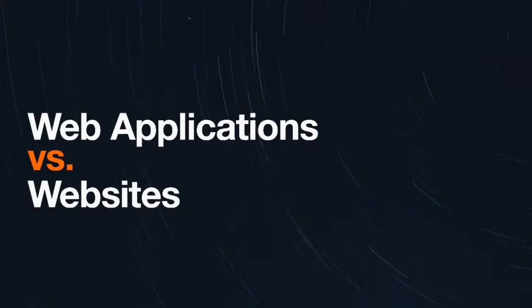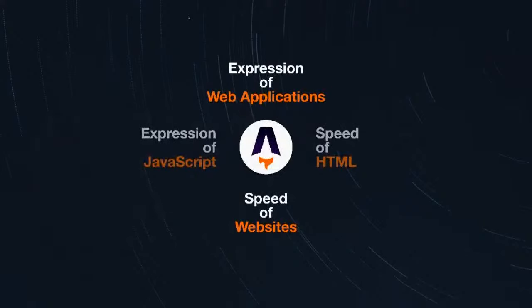Even with server-side rendering, you enter what you could call the uncanny valley of web performance — the site has been sent as server-side-rendered HTML, but now you need to send the whole application to make it dynamic. Users, especially on a phone or lower-powered device on a worse internet connection, see a site but can't click it because the application hasn't been sent over yet. Astro tries to walk the line: build using components and modern architecture, but serve static documents to the browser and only hydrate what's needed.